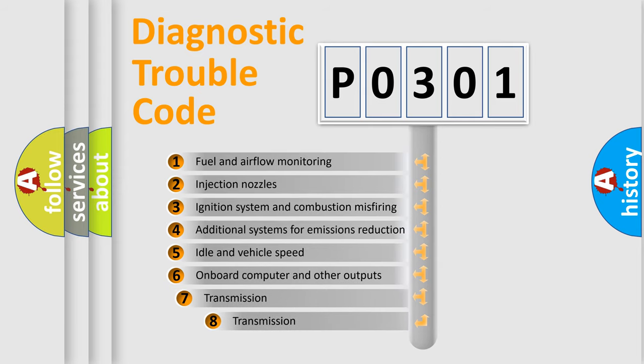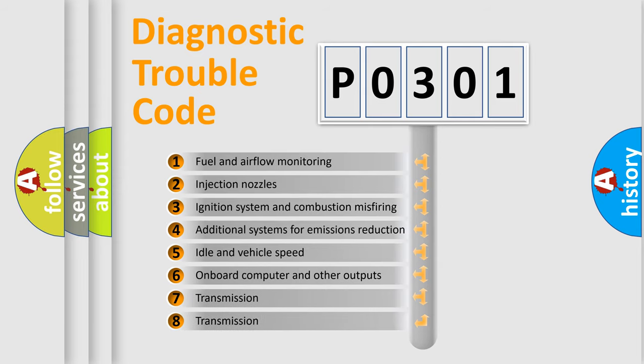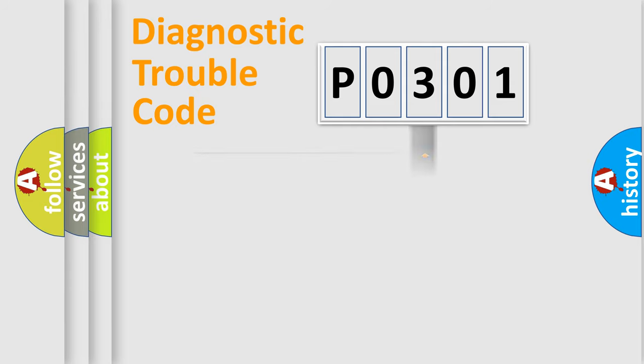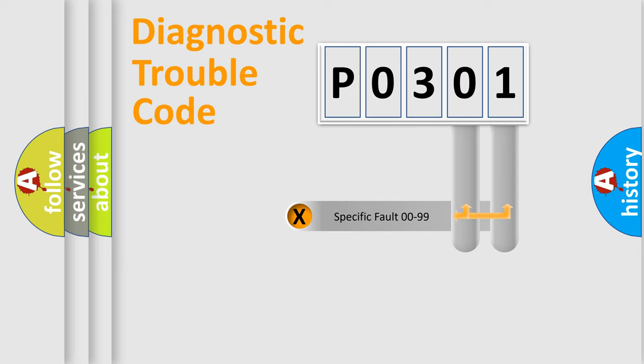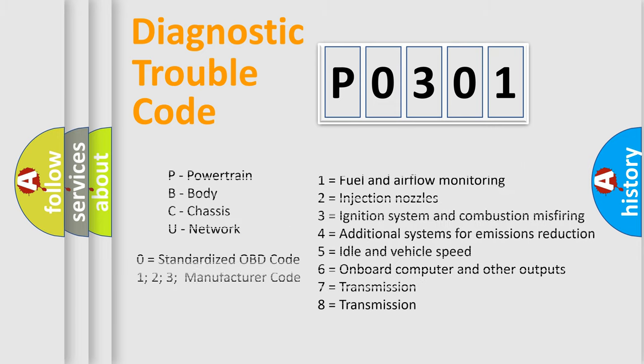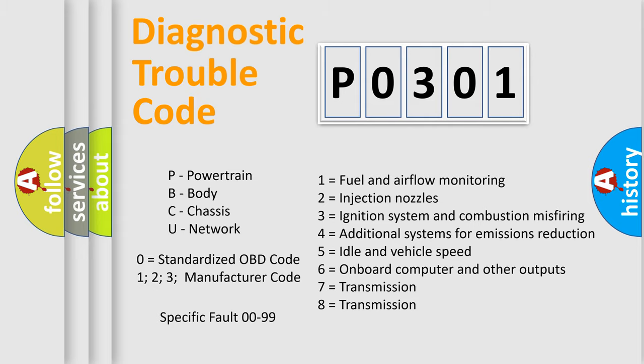The third character specifies a subset of errors. The distribution shown is valid only for the standardized DTC code. Only the last two characters define the specific fault of the group. Let's not forget that such a division is valid only if the second character code is expressed by the number zero.